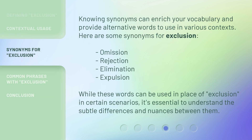Knowing synonyms can enrich your vocabulary and provide alternative words to use in various contexts. Here are some synonyms for exclusion: omission, rejection, elimination, expulsion. While these words can be used in place of exclusion in certain scenarios, it's essential to understand the subtle differences and nuances between them.